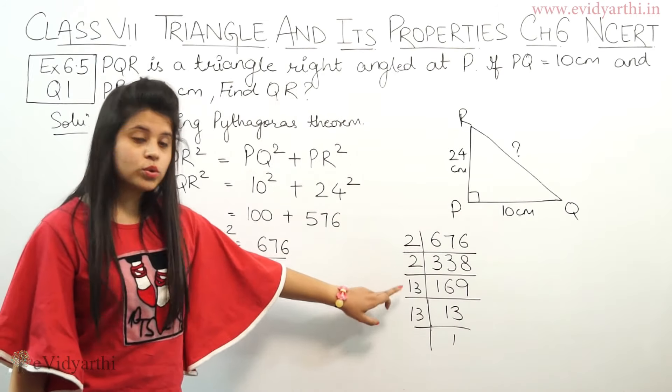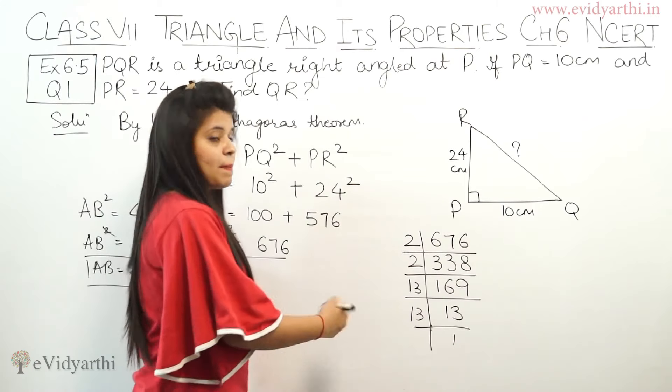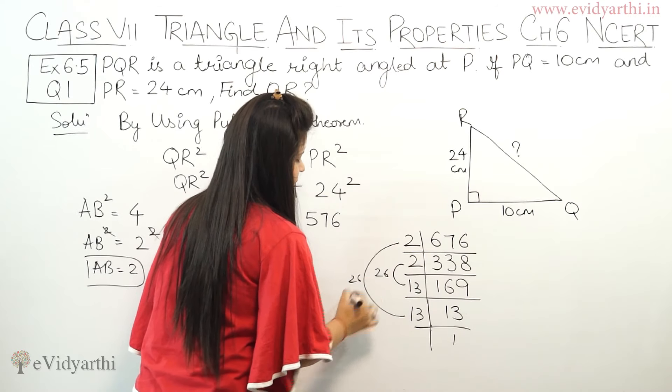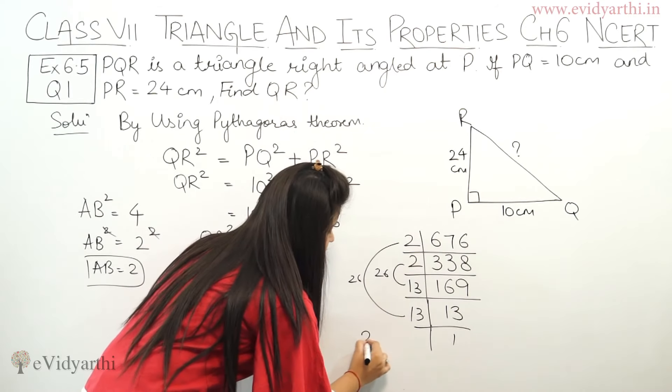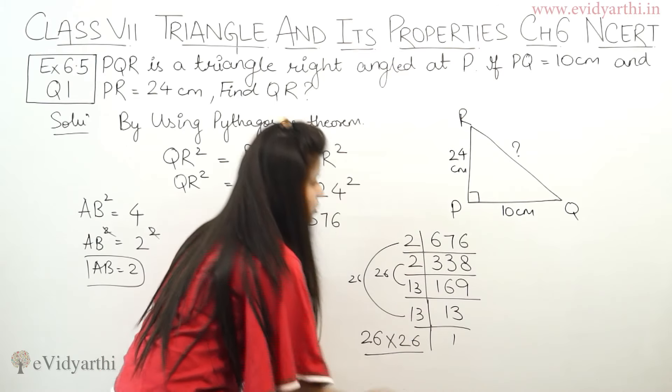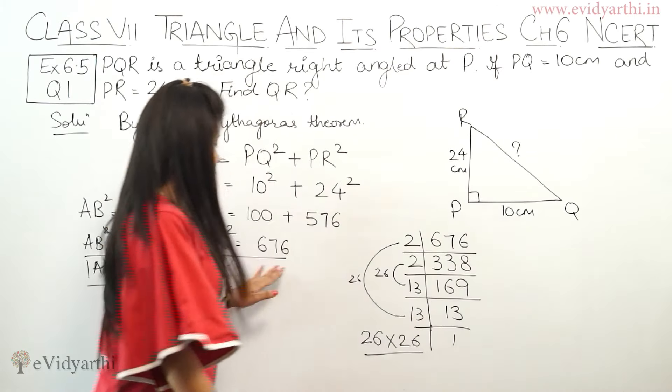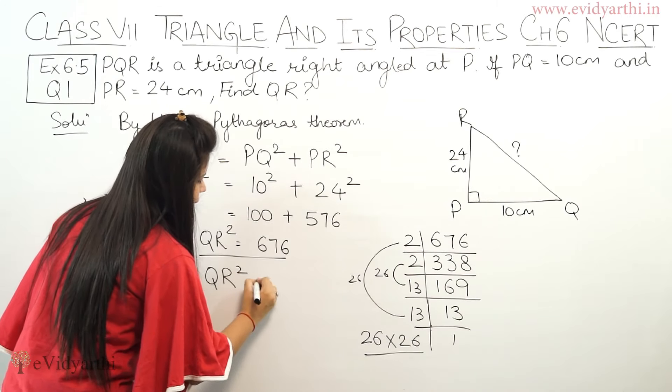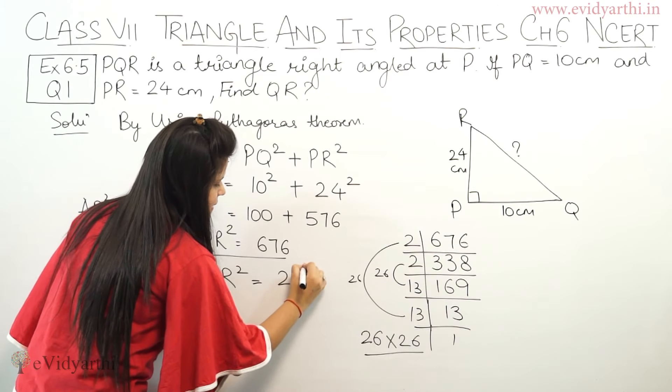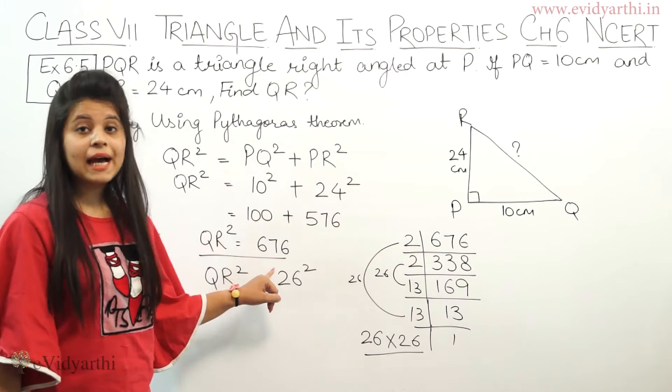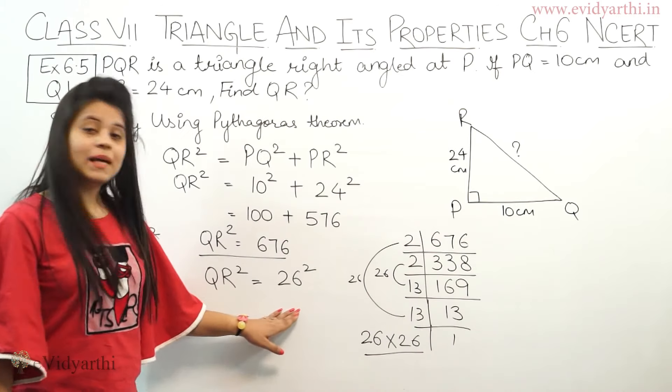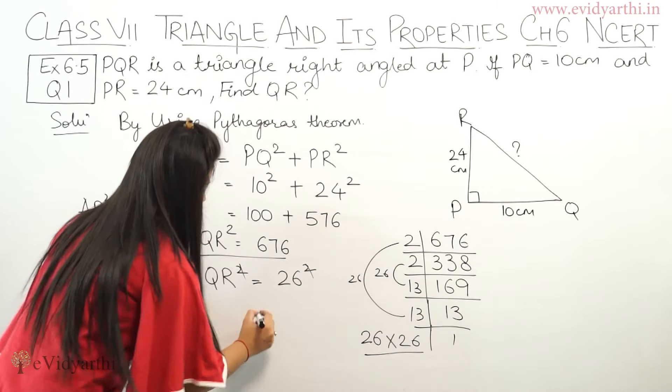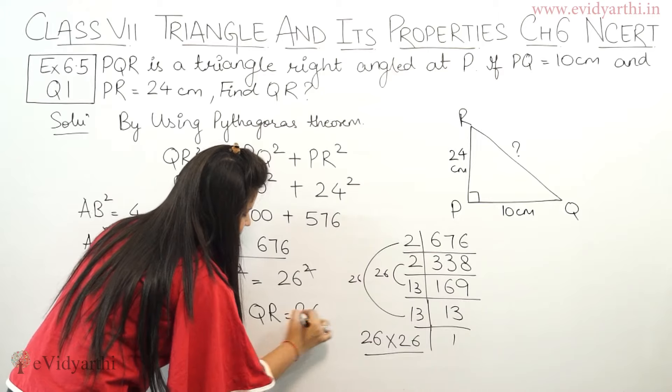Now you can make pairs. Like, 13 into 2 is 26. 13 into 2 is 26. So you will know that 26 multiplied by 26 is 676. Now here we have 676, so we can write QR square equals 26 square, because this is 26 multiplied by 26, that means 26 square. And again, square to square cancel, so QR comes to 26.